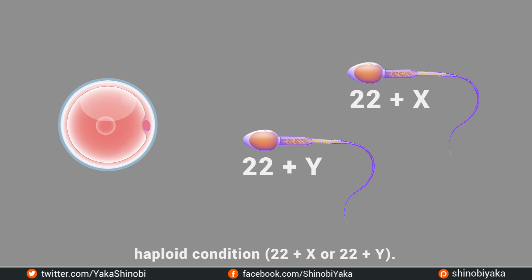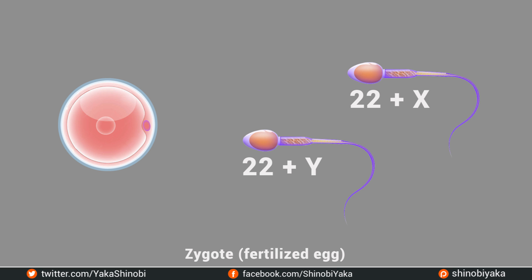Any of the two types of sperm can fertilize the egg — it is a pretty brutal first-come, first-served process. If a Y-bearing sperm fertilizes the egg, the zygote has 44+XY composition and the resulting embryo grows to be a boy. When an X-bearing sperm fertilizes the egg, the resulting zygote has 44+XX composition, and this embryo develops into a girl. All children inherit one X chromosome from the mother; sex is always determined by the other sex chromosome inherited from the father.